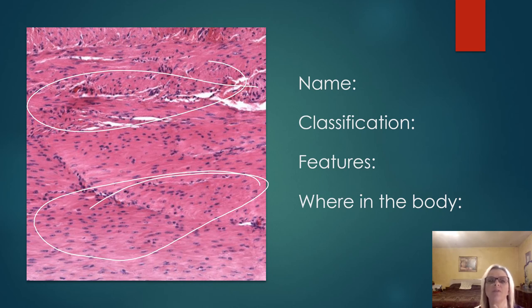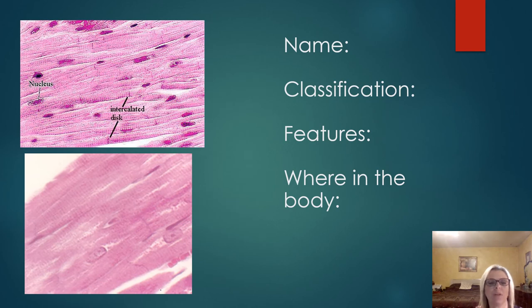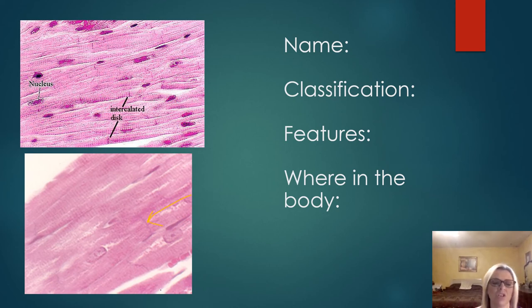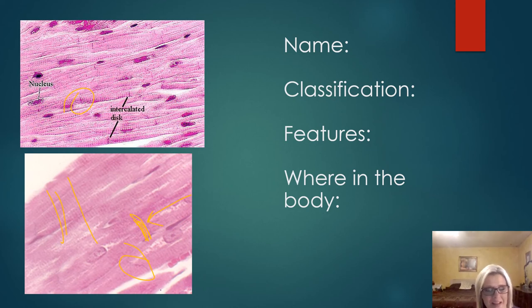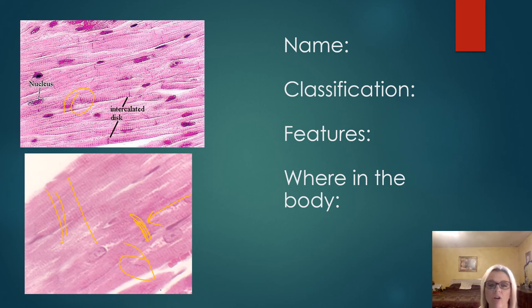The labels kind of give this away, but what I'd most likely give you is a picture like this and ask what the tissue is and what that feature is. I can see alternating bands, which makes me think skeletal muscle — but I see some connecting bands here too. I can see the intercalated disc, so that helps me know this is cardiac muscle. The alternating bands are not nearly as prominent as in skeletal muscle.